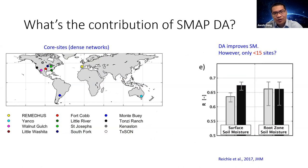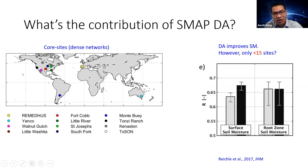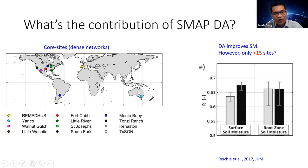A burning question for the SMAP Level 4 product, and probably for all land data assimilation systems, is to understand the contribution of SMAP data assimilation. This has been done a lot by the SMAP Level 4 team, primarily based on the SMAP core validation sites of dense soil moisture networks. Although we can quantify the contribution through evaluation, we cannot really generalize our conclusion over the entire globe.